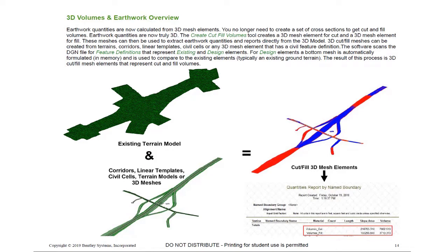We simply use the feature definition assigned to those particular civil elements. Once the design elements are defined, it's going to compare those design elements against the existing elements — typically your existing ground terrain. The result of this process gives us 3D cut fill mesh elements that represent the cut and fill volumes.